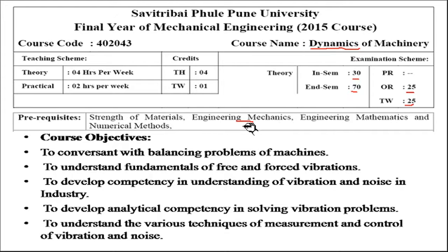In general, for dynamic systems the state of the system depends on the input provided to it and time. In machines, input is provided by a prime mover, supplying energy to do work. During this energy conversion, different forces act on the machine, and sometimes these unexpected forces cause problems such as loss of energy in the form of vibration.